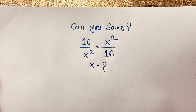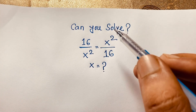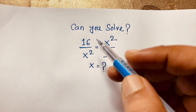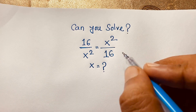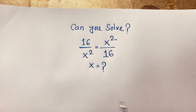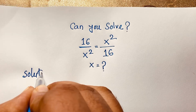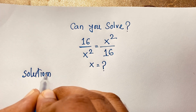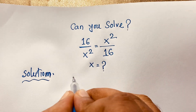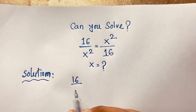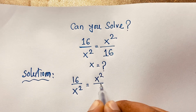Hello everyone, welcome to Russia's Classroom. Today we have an interesting math question: 16 over x squared is equal to x squared over 16. What is x? How do we solve this? Our question is 16 over x square is equal to x square over 16.